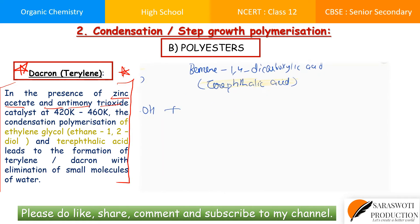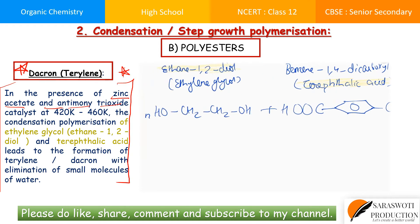The structure of terephthalic acid has a benzene ring with -COOH groups at the 1 and 4 positions (para). Since 1,4 means para position, we draw the benzene ring and attach -COOH at first and fourth positions. After polymerization, we take -OH from the carboxylic acid and -H from the alcohol to eliminate water.